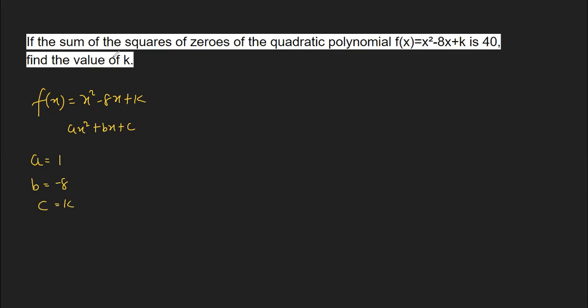Now, the zeros of a quadratic polynomial are represented by alpha and beta, and since it is quadratic we have two zeros. They are saying the sum of the squares of the zeros is 40 — not the sum of the zeros, but the sum of the squares. So what is given to us is α² + β² = 40.